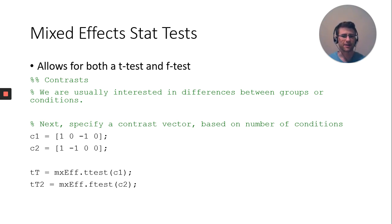Here's how you run the t-test. You do mixed effects dot t-test, put your contrast in, save as an output variable. For the f-test, replace the t with an f.